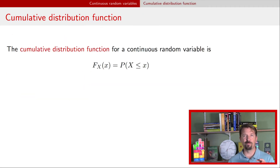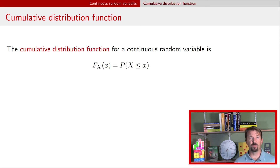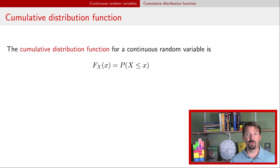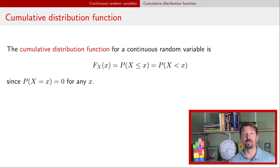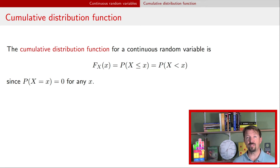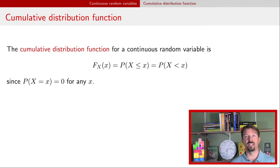Let's start with the piece that's probably the most similar: the cumulative distribution function. Discrete random variables had a CDF, and continuous random variables have a CDF, and the definition is actually the same for both — it's the probability of the random variable being less than or equal to a particular value. We can also say it's the probability of the random variable being strictly less than that value, because the probability of being equal to any particular value is zero, so less than and less than or equal to give the same probability.